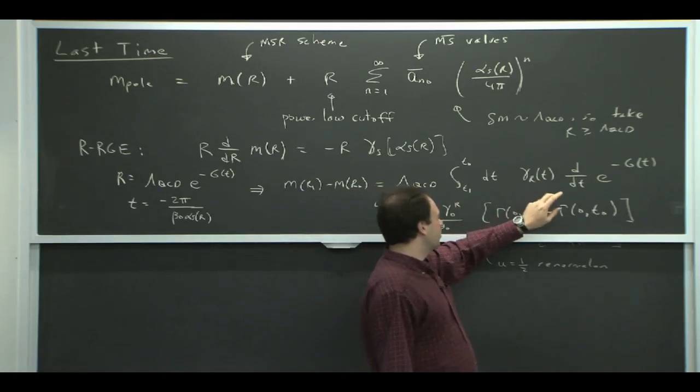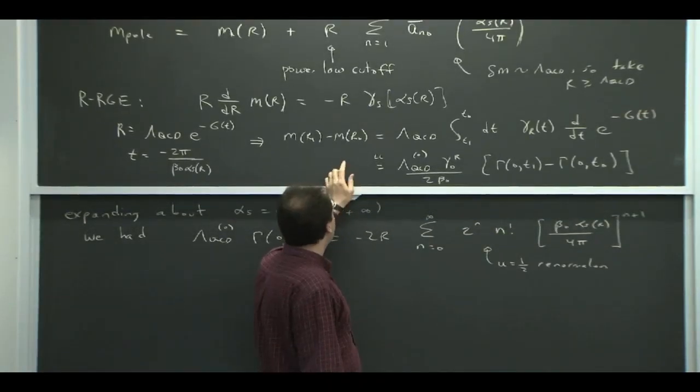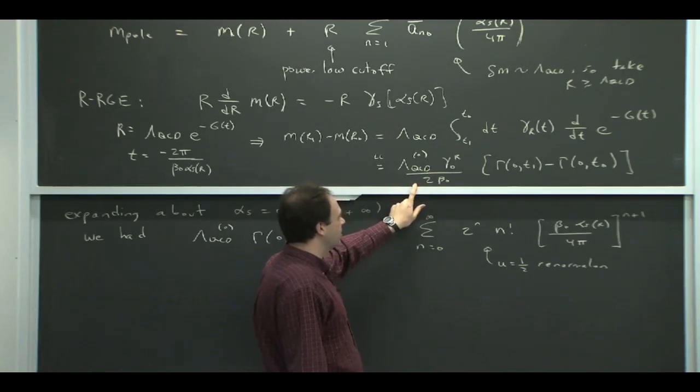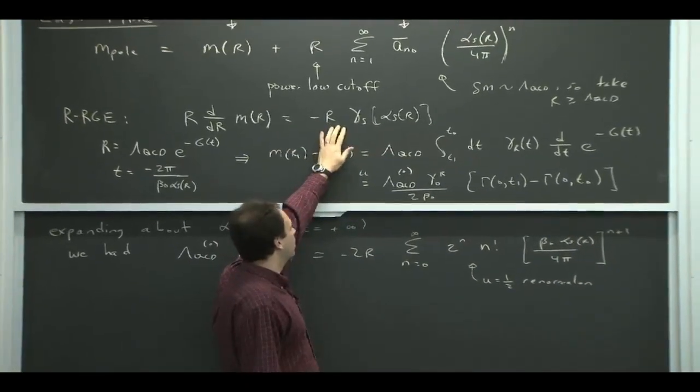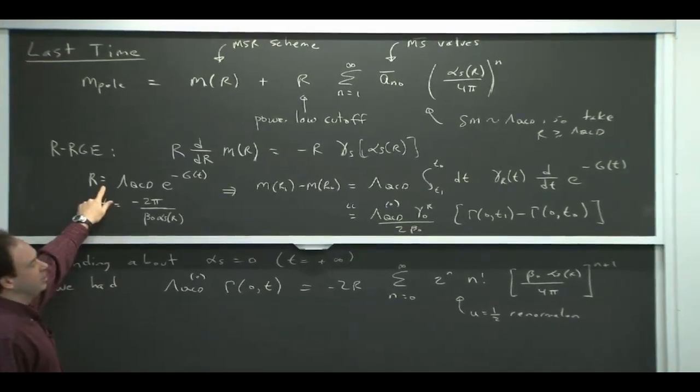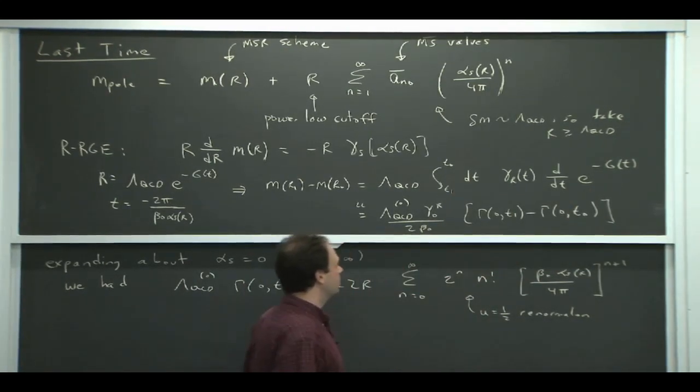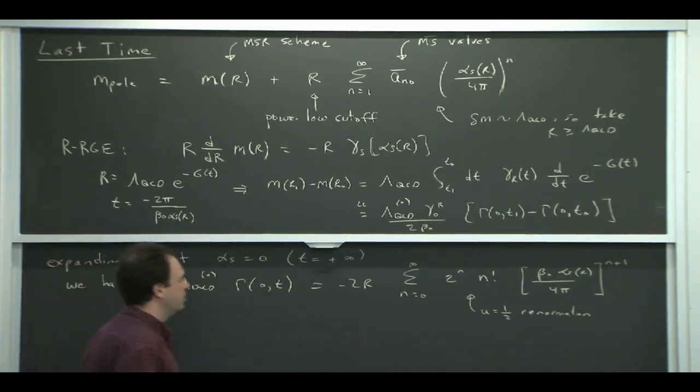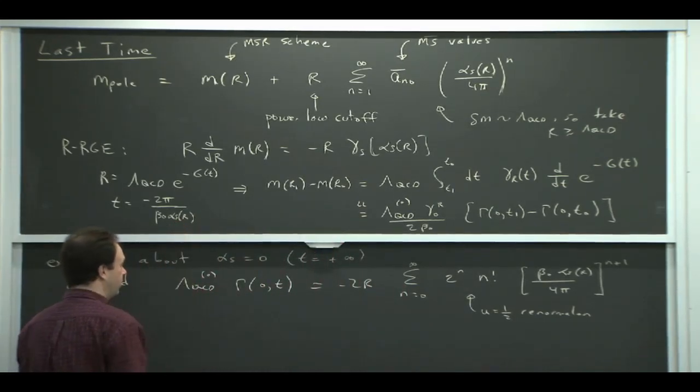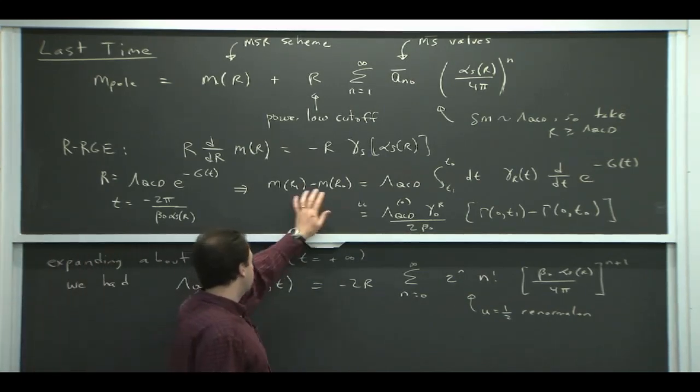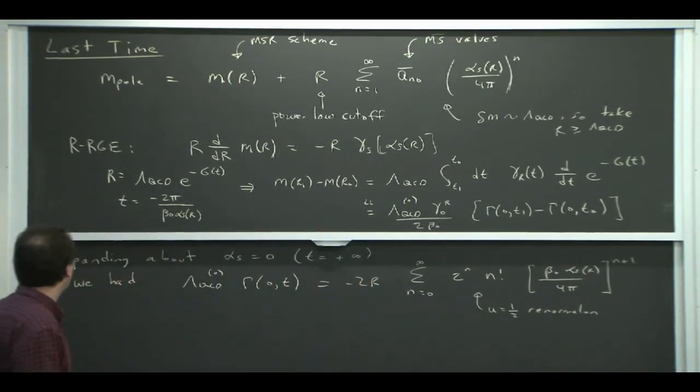It is summing some logs related to the running of alpha, but it's also got this power. When you solve this anomalous dimension equation, which we talked about last time, you get an integral in this t variable. At leading log order, it looks like this: difference of two incomplete gamma functions. Because of the mass dimensions, it has to be made up by mass dimensions on the right-hand side. The only thing that has dimensions is lambda QCD, and that's exactly what pops out of solving this equation. The R gets converted to lambda QCD by this formula here.